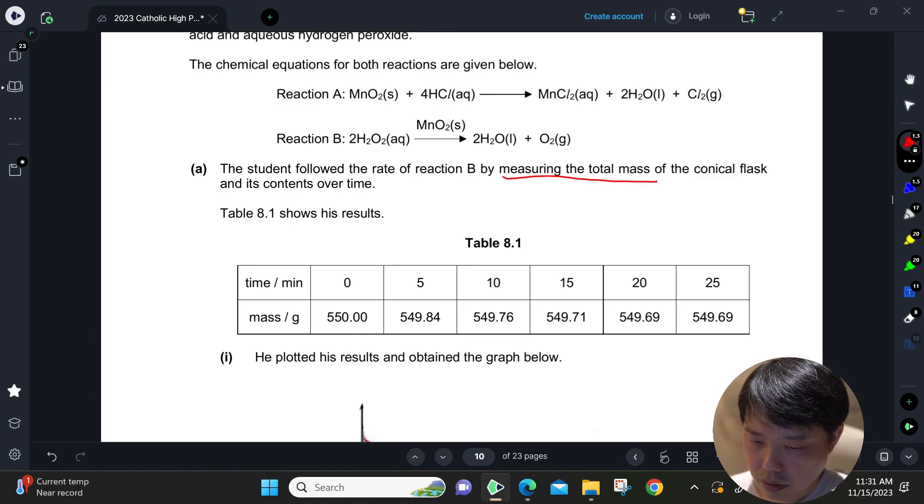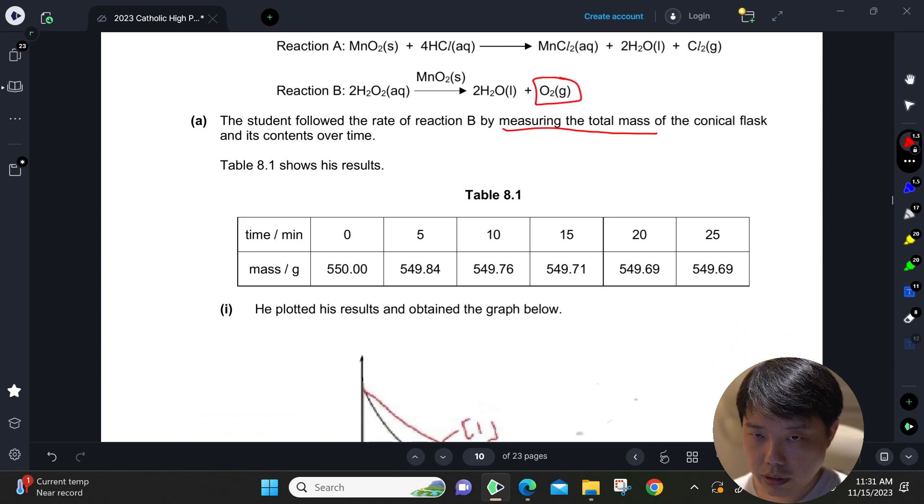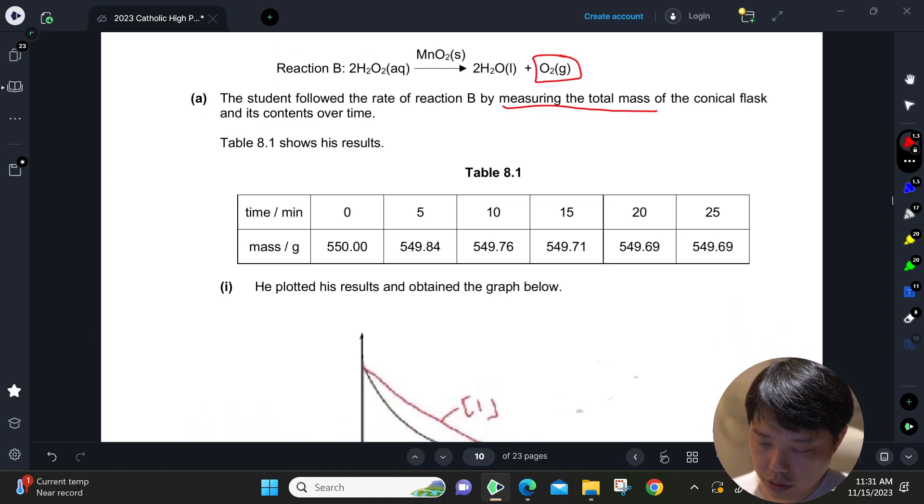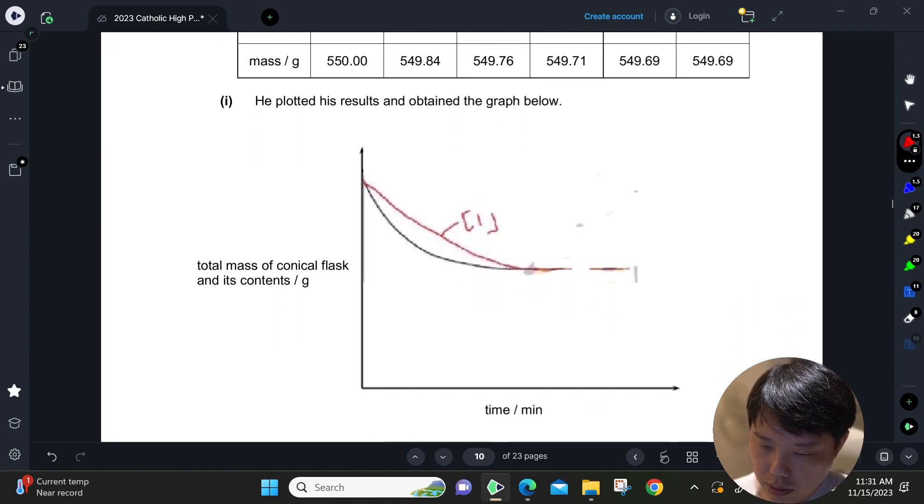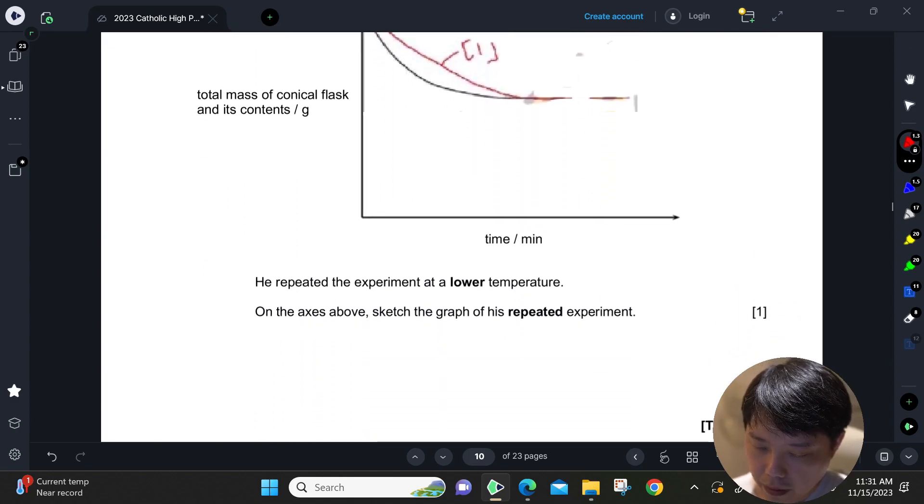What is lost is in fact your oxygen gas. The decrease in mass was due to the loss in O2 gas that was evolved. So this is the graph that was plotted.